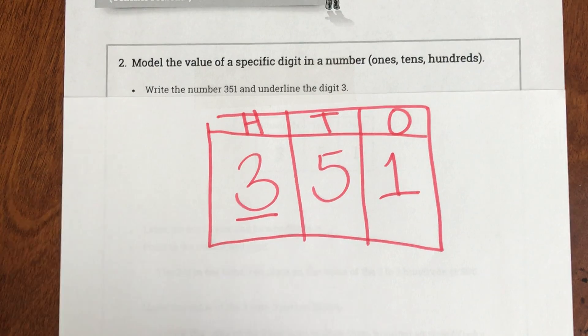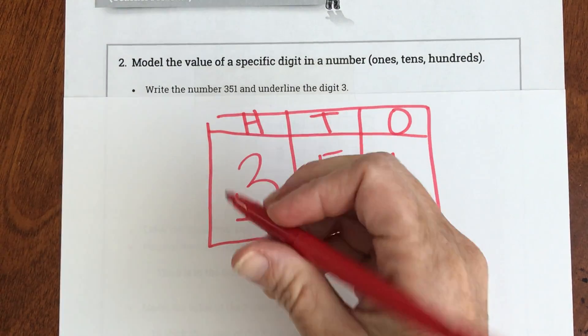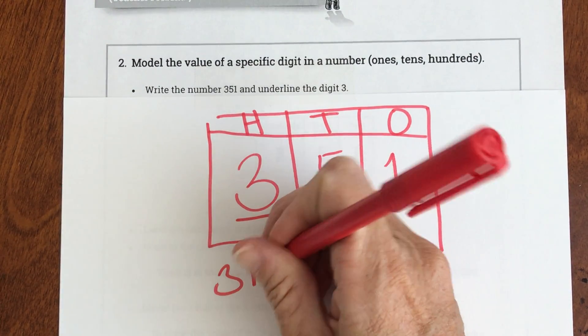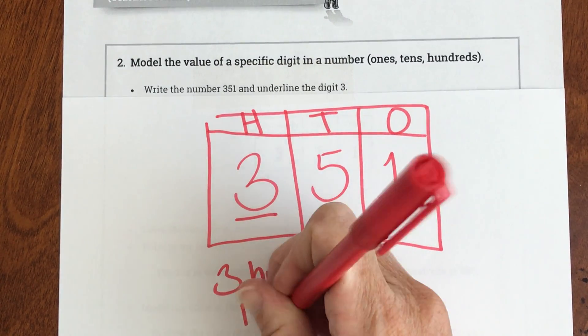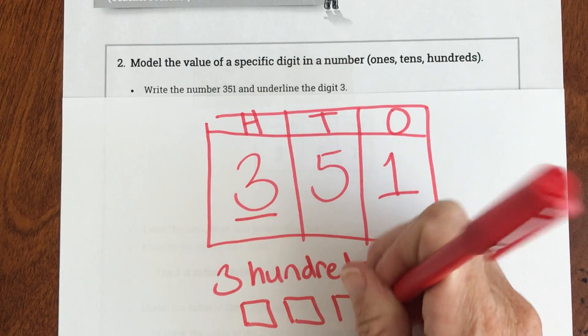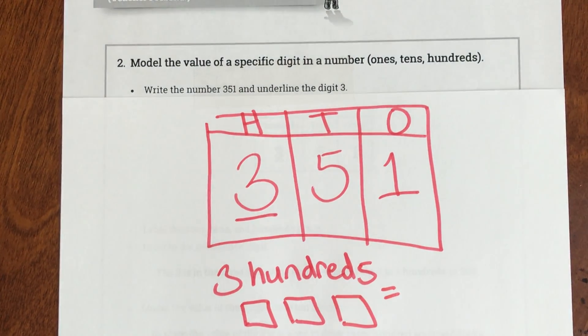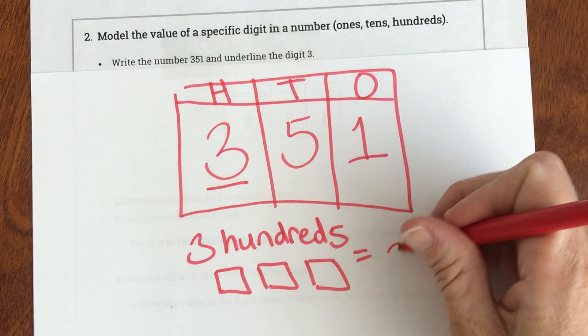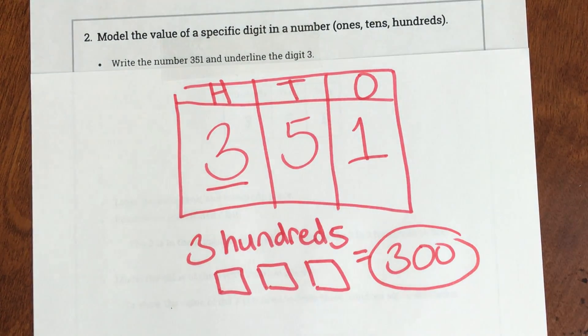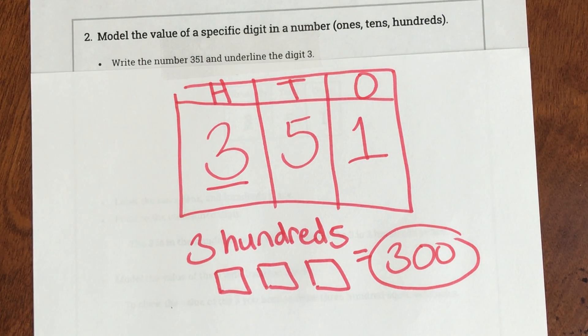Then it tells me what? I have three hundreds. That's what that says. I have three hundreds. And if I was to draw them, that's what I would have. Three hundreds. So three hundreds means that the value is 300. That is what that three is worth.